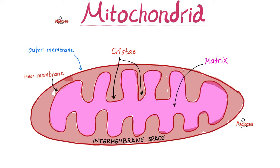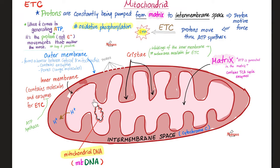Recall the structure of the mitochondrion. What's the outer part? That's the outer membrane. And then the inner membrane. Between the outer membrane and the inner membrane, what do you call this lovely space? The intermembrane space. And what are the names of these infoldings? Cristae, which increase the surface area available for oxidative phosphorylation to help you make more energy. And then the inner filling is the matrix. And there is your mitochondrial DNA, abbreviated mtDNA.